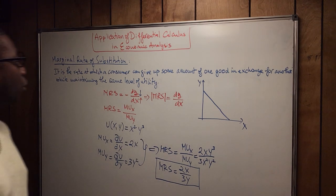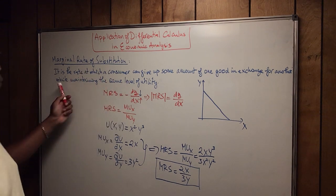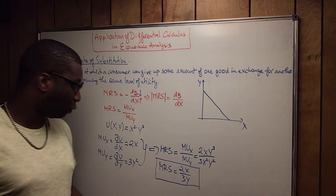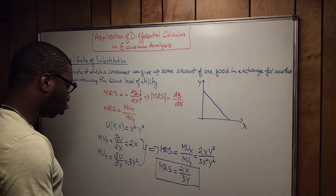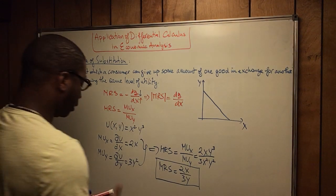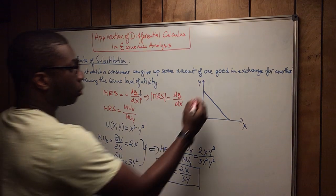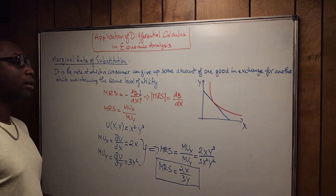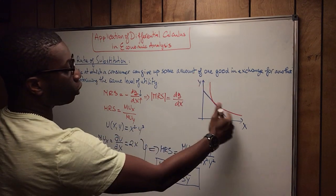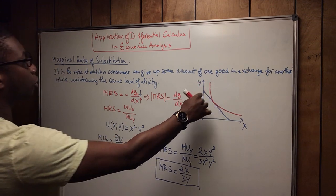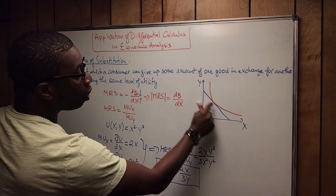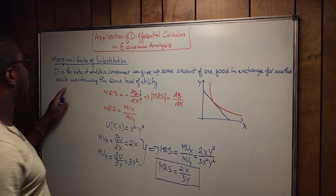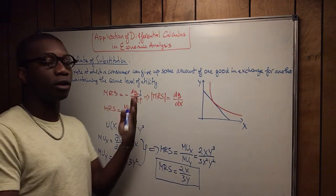Remember that when we talk about the marginal rate of substitution, we also mentioned that the utility is the same for the consumer. So there is an indifference curve associated with it. The indifference curve passes along the slope, and the level of utility of the consumer along the indifference curve doesn't really change, because he is maintaining the same level of utility while consuming those two goods.